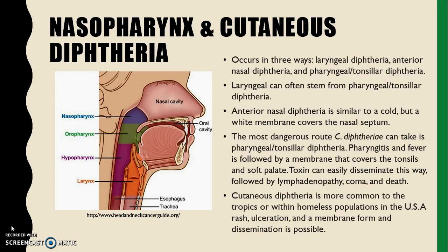Skin or cutaneous diphtheria is more common in the tropics or within homeless populations in the U.S. C. diphtheriae manifests itself in the skin via rash, ulceration, and a membrane. This form is rare, but can also result in dissemination.